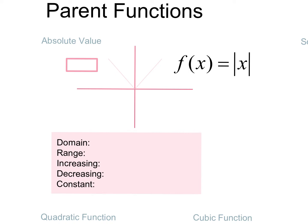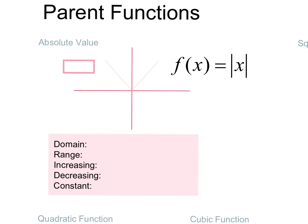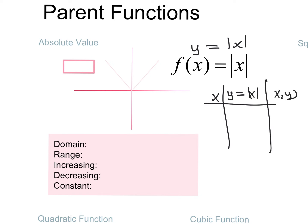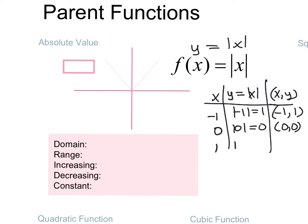I'm going to make a function table with an x column. In the middle I'll show what my function is — remember, f of x is just a fancy way of saying y equals. So I'm going to do y equals the absolute value of x, and my third column will be the ordered pair to graph. Plugging in negative 1 into the absolute value gives positive 1, so the ordered pair is negative 1, positive 1. Plugging in 0 gives 0, so the pair is 0, 0. Plugging in 1 gives 1, so the pair is 1, 1.